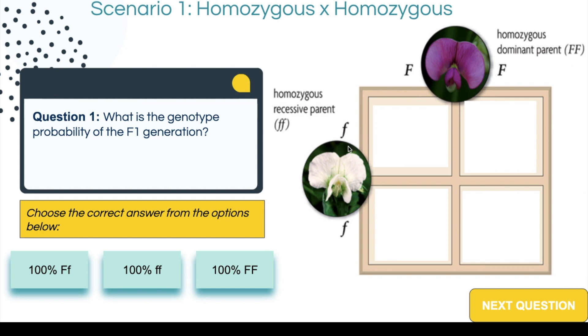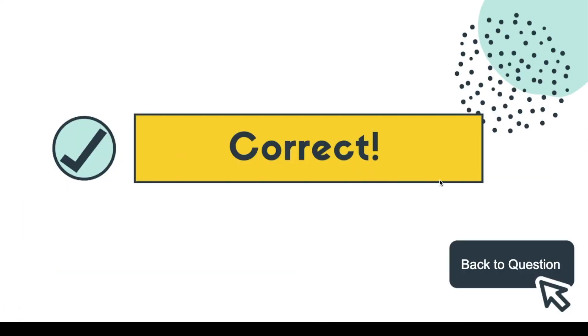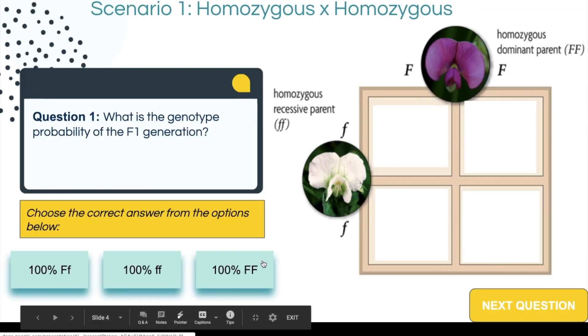You can add as many options as you'd like — I wanted to limit it to just three. One of these options is going to be the correct option, and it will lead the students to a slide that says this is the correct option. The others will be the incorrect options.